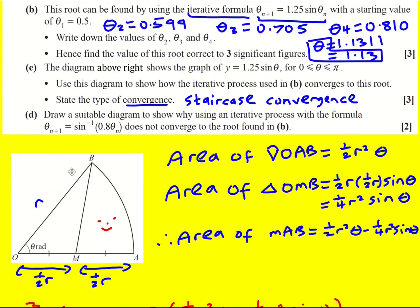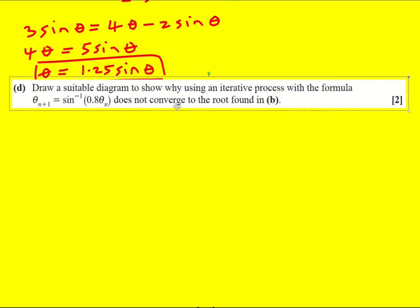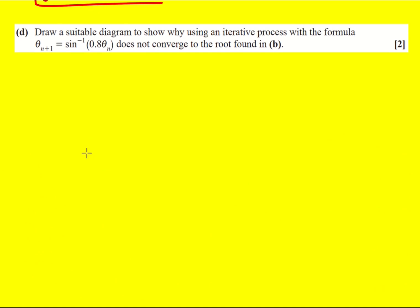All right, finally we're asked to explain why a different iterative formula does not work. So it's going to be a similar sort of setup. But now we need to plot y equals the inverse sine function. It's worth just learning what this looks like. And it basically is like the sine function, but it sort of bends up the opposite way. There's a few different ways to remember what it looks like. Method one is that it's actually going to be the sine function, but then you reflect it in y equals x.